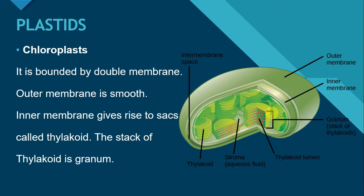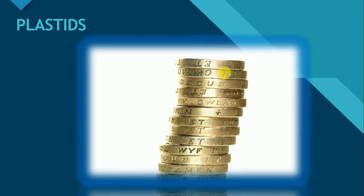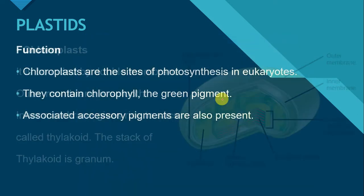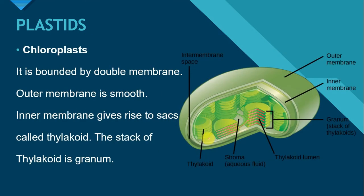Granum is used for a single stack, while grana refers to multiple stacks of thylakoids. We can understand the stack of thylakoids, or granum, with the help of a diagram of a pile of coins. Just suppose each coin is a thylakoid, and just as coins are stacked on top of one another to form a pile, similarly, thylakoids inside the chloroplast are also present in the form of stacks. These thylakoids are present in the stroma, which is an aqueous liquid.